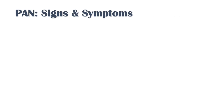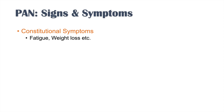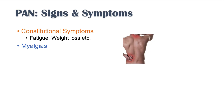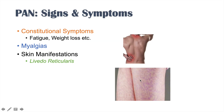Some of the signs and symptoms of PAN include the following. Typically there are constitutional symptoms — fatigue, weight loss, perhaps fever and chills. There can also be myalgias, so feelings of muscle aches and cramps. There can be skin manifestations, typically livedo reticularis, giving a webbing-type look to the skin. And there can be neuropathy — issues with sensation.